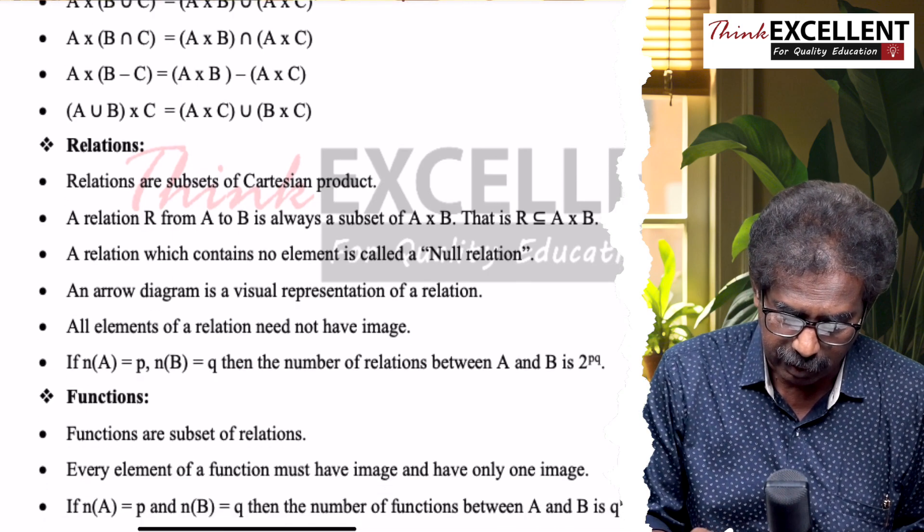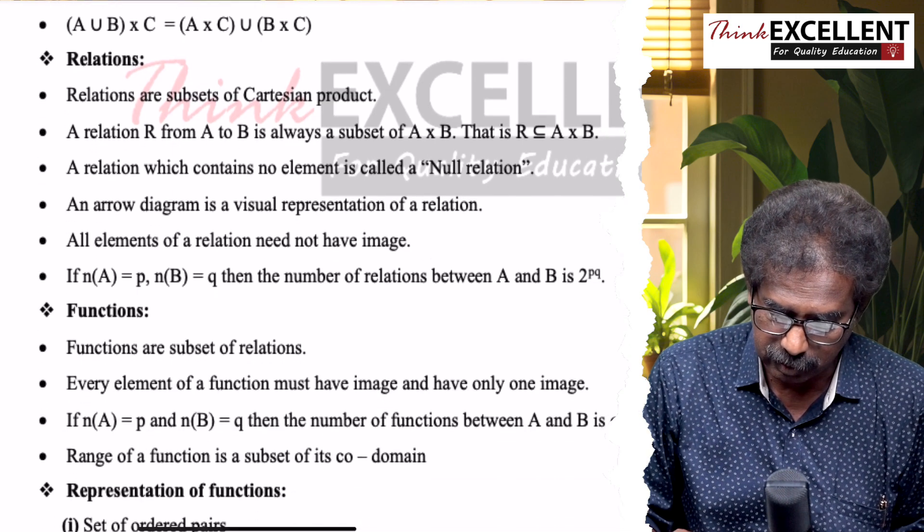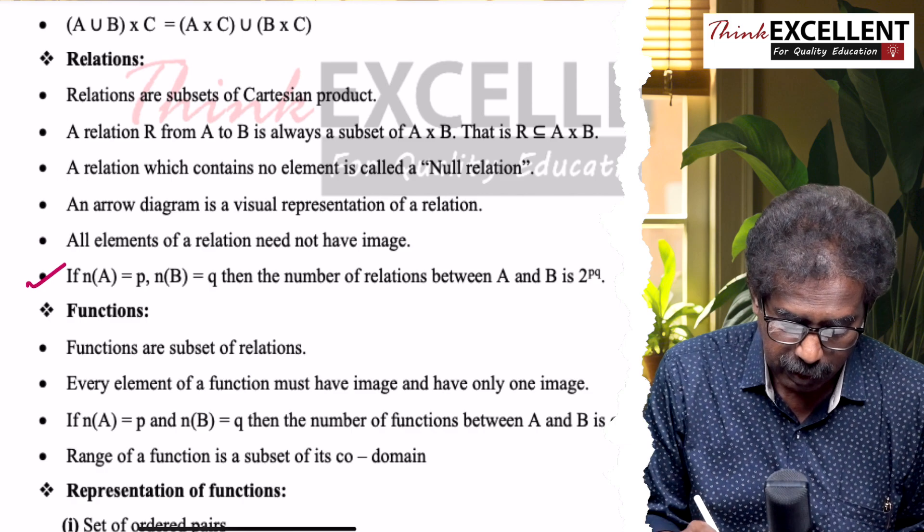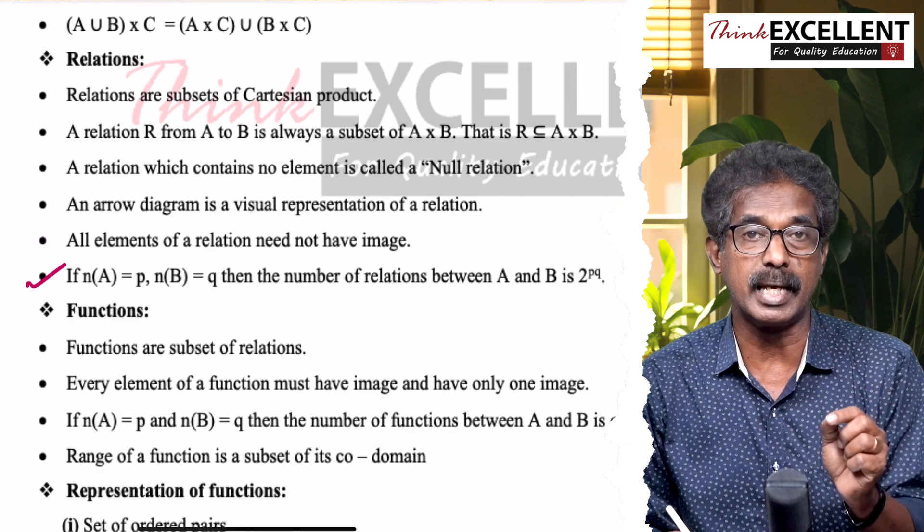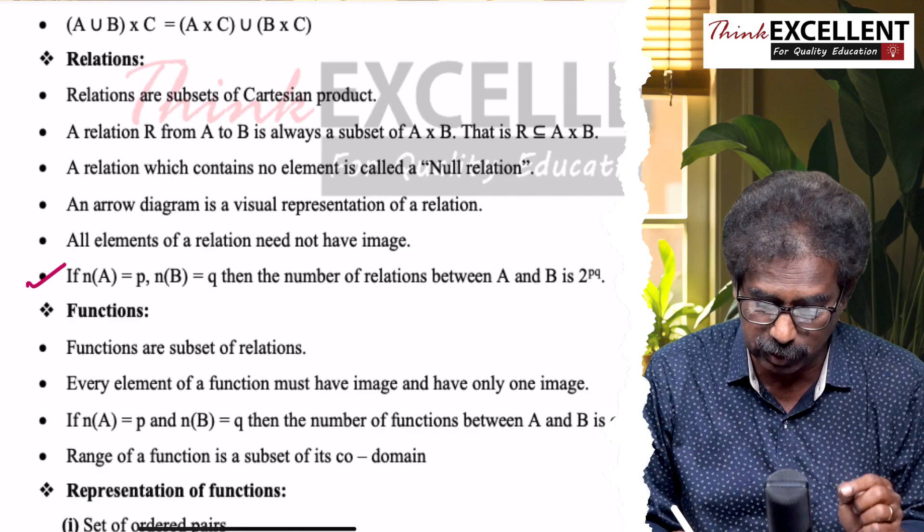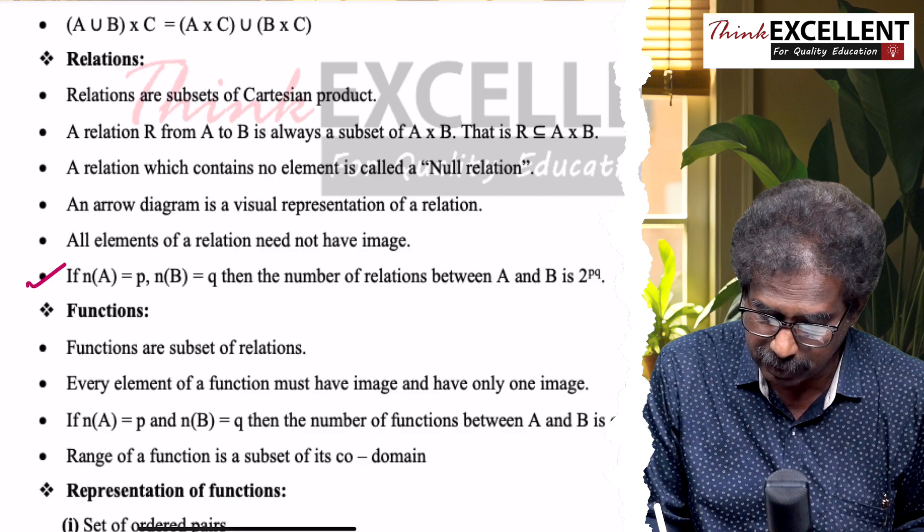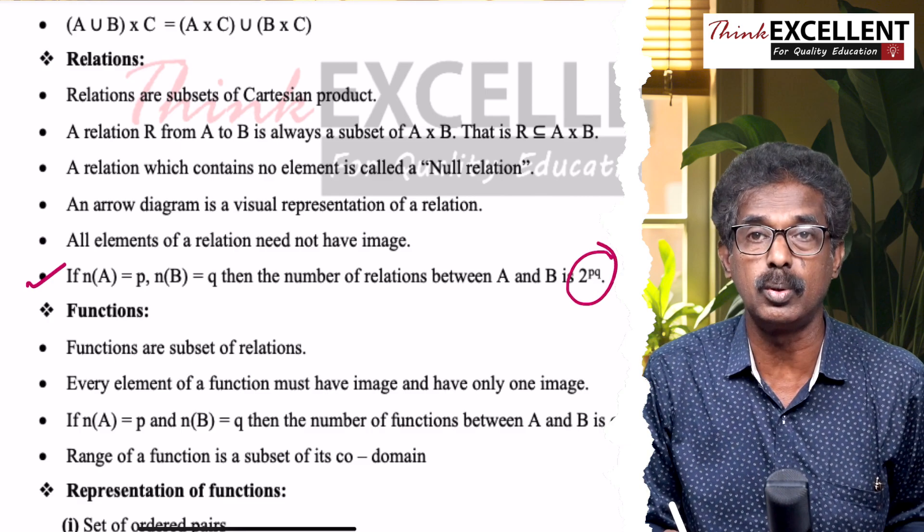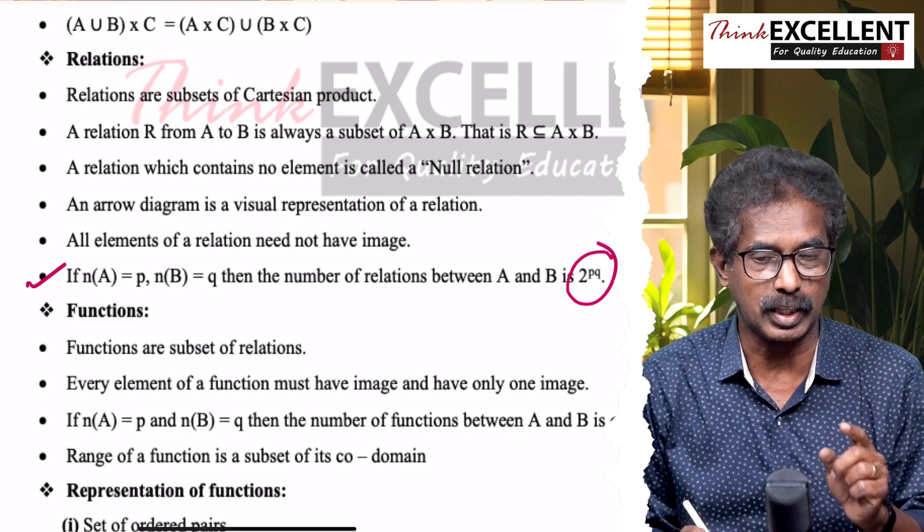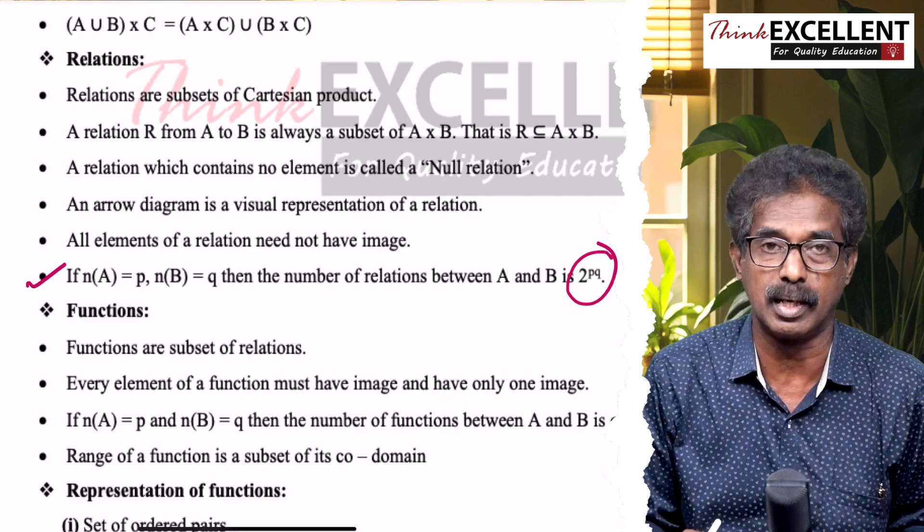A × (B ∪ C) = (A × B) ∪ (A × C). A × (B ∩ C) is similar. A × (B − C), that means we expand. (A ∪ B) × C = (A × C) ∪ (B × C). Then, relations are subsets of Cartesian product. This is very important, especially the last one.